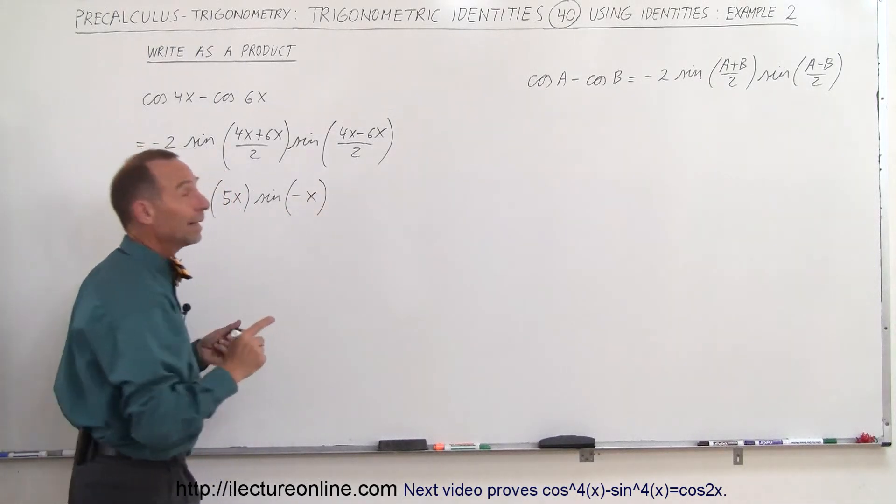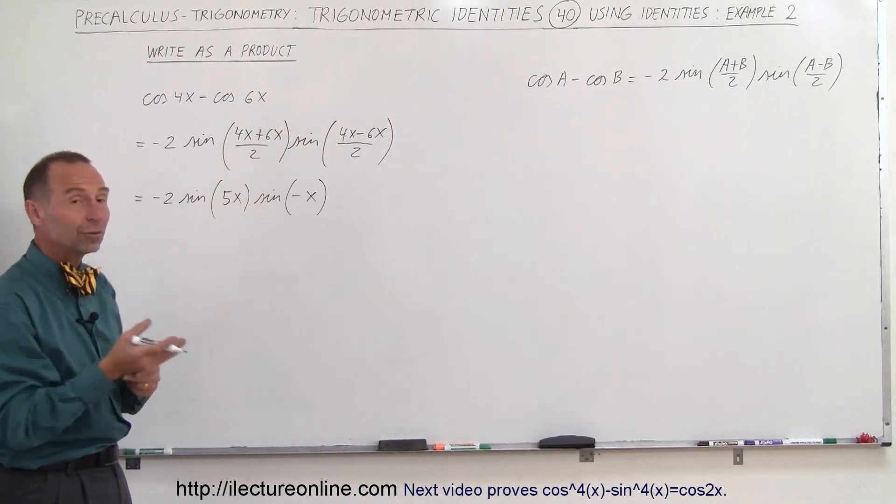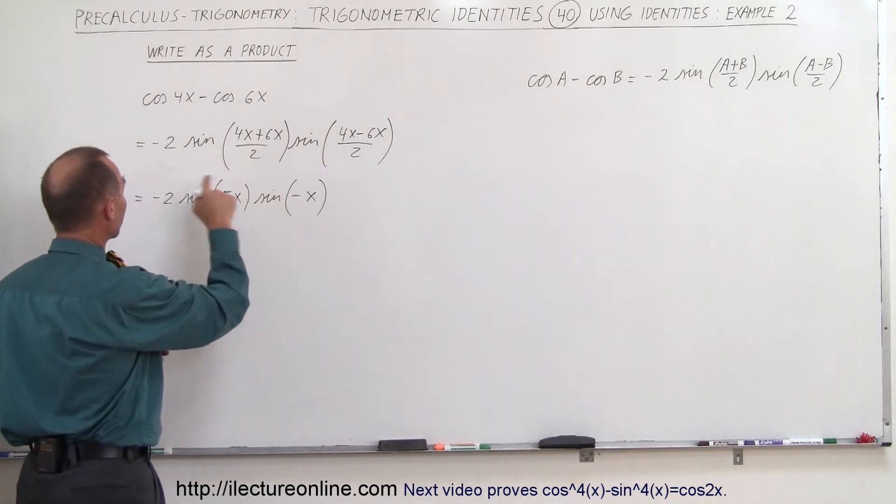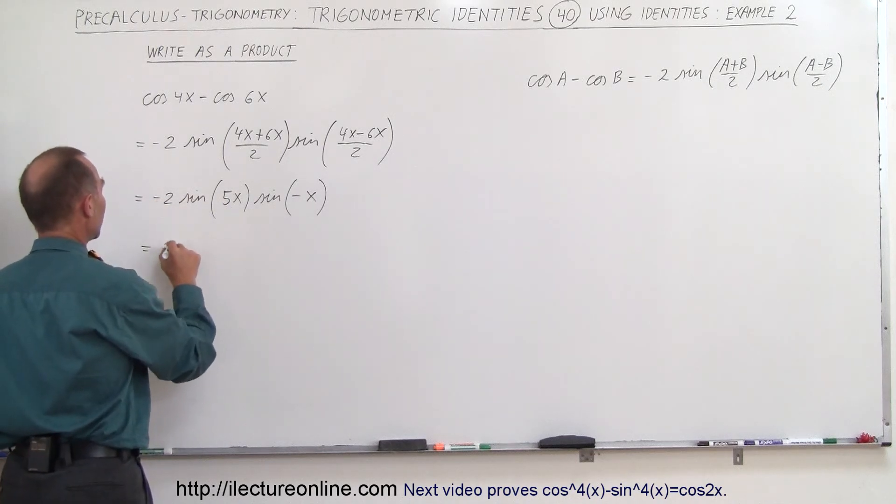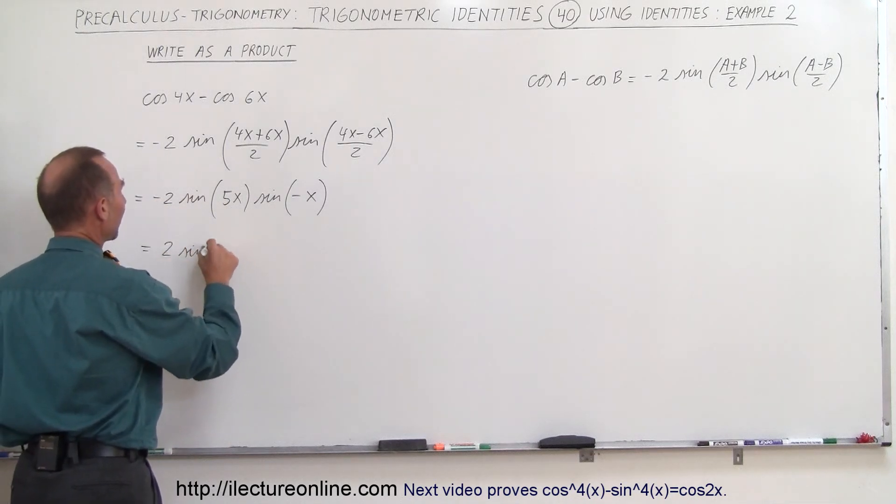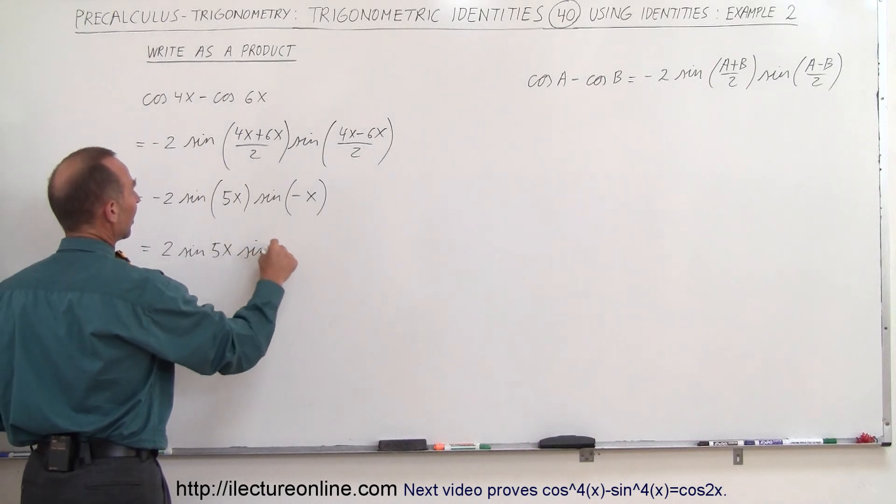Then I can use the identity that the sine of a negative angle equals negative times the sine of the angle, and that negative will multiply times this negative to make it positive. So this can be written as 2 times the sine of 5x times the sine of x.